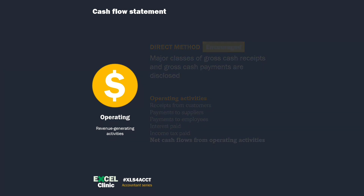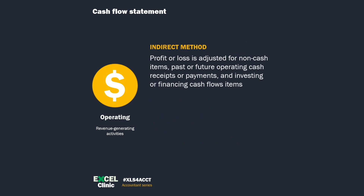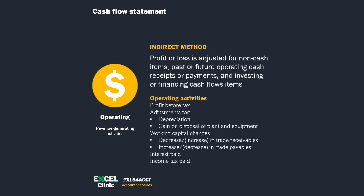Under the indirect method, we derive the operating cash flows. We start with profit or loss and adjust it for non-cash items, cash movements that are not in the current period — for example, revenue recognized in your profit and loss that you will only receive in the next period — and investing or financing cash flow items. It is longer and disappointing for the standard setter, but it is a far more common method adopted in practice because it is easier to prepare.